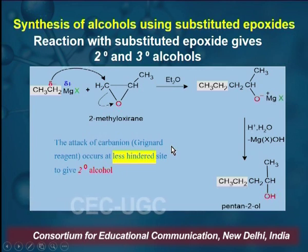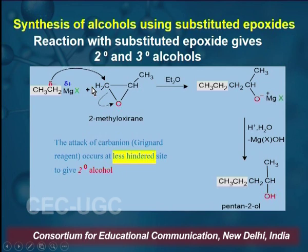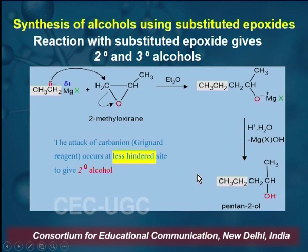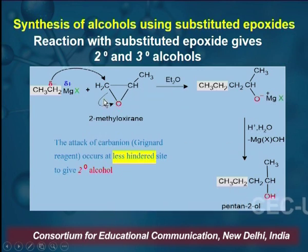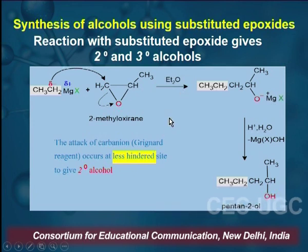Next is the reaction with a substituted epoxide. Here the product will be a secondary alcohol. For example, with ethyl magnesium bromide, the reaction takes place at the least substituted or less hindered carbon — there is a nucleophilic attack there — and the product formed is a secondary alcohol. The methyl group which is on the epoxide ring contributes to the carbon chain, and you can alter the carbon chain length accordingly. The reaction takes place at the least hindered site to give secondary alcohol.